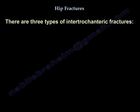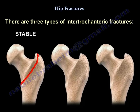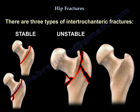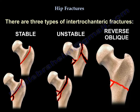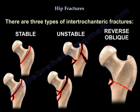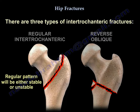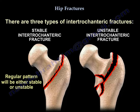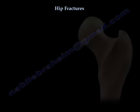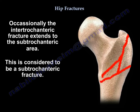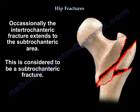There are three fracture types: stable, unstable, and reverse oblique. You can also divide them into regular intertrochanteric fracture and reverse oblique, where the regular pattern is either stable or unstable. Occasionally, the intertrochanteric fracture extends into the subtrochanteric area, and that is usually considered a subtrochanteric fracture.